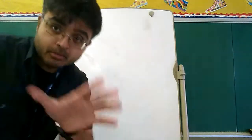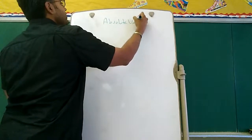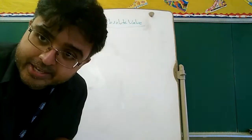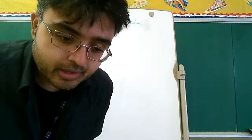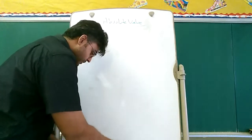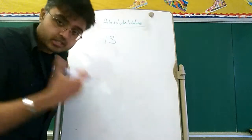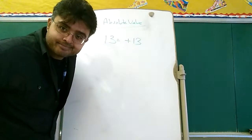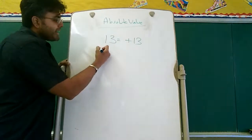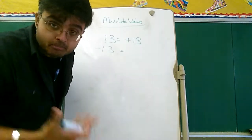Let me explain to you what Absolute Value is. Every number in the world is a positive number, unless there's a negative in front of it. For example, the number 13 — by itself, number 13 is a positive number. 13 is the same thing as plus 13. Now, if I put minus in front of 13, then minus 13 is a negative number.